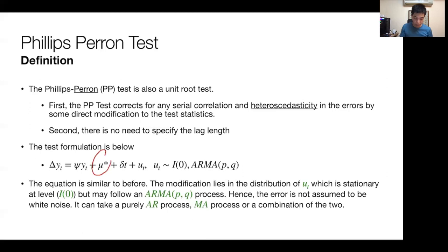The equation is similar to the one before. You have an intercept, a time trend, and the initial term YT minus 1. But you also have this error term having the assumption of being ARMA distributed and stationary. Hence the error term is not assumed to be white noise. It can take a purely AR process, a purely MA process, or a combination of the two, a more generalized framework than white noise, which is very restrictive.